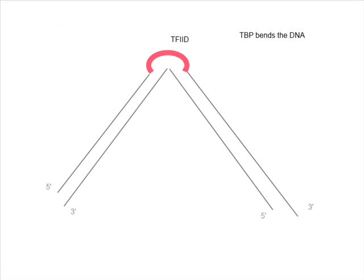TAF serves as a promoter-recognizer. TF2D bends the DNA.